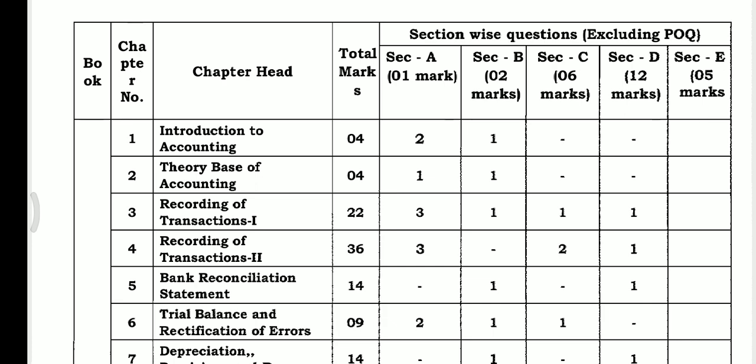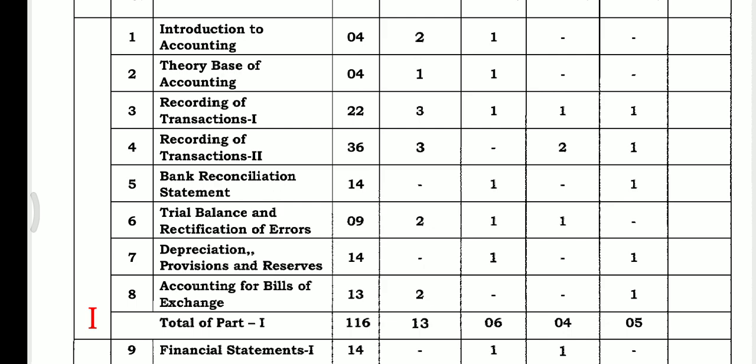That's the reason. Anyhow, the first chapter is for a total of 4 marks, second chapter is for 4 marks, third chapter is for 22 marks. Second chapter is for 14 marks, sixth chapter is for 9 marks, seventh chapter is for 14 marks, eighth chapter is for 13 marks. Total: 116.